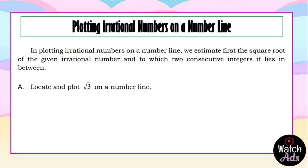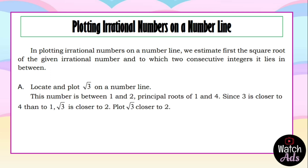Let's have an example. Locate and plot the square root of 3 on a number line. This number is between 1 and 2 because 1 squared is 1 and 2 squared is 4. Since 3 is closer to 4 than to 1, the square root of 3 is closer to 2. Now we plot the square root of 3 closer to 2, as shown.